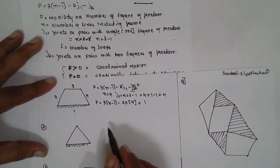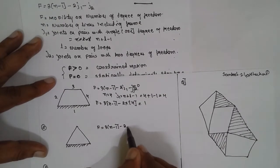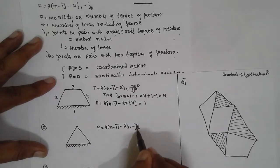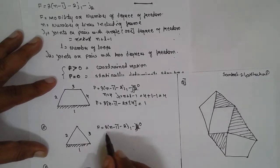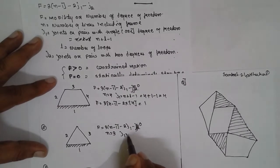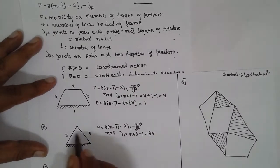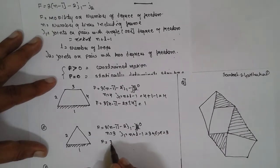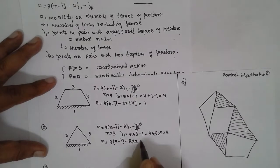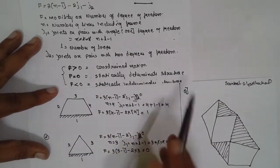Second problem. Formula: f = 3(n − 1) − 2·j1 − j2. No higher pair, so j2 = 0. Number of links: 1, 2, 3 — so n = 3. j1 = n + l − 1 = 3 + 1 − 1 = 3 (single loop). Substituting: f = 3(3 − 1) − 2(3) = 6 − 6 = 0. Since f = 0, this is a statically indeterminate structure.